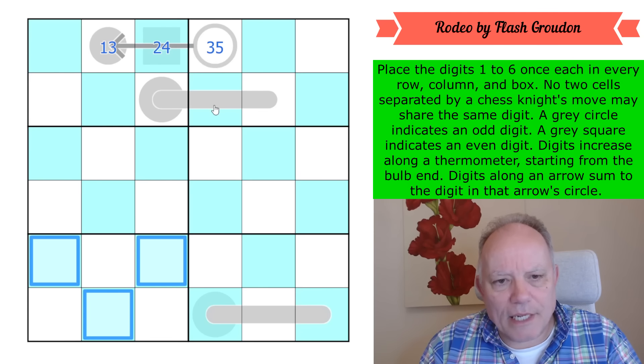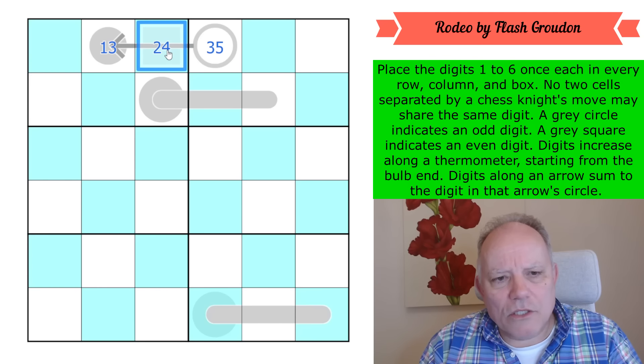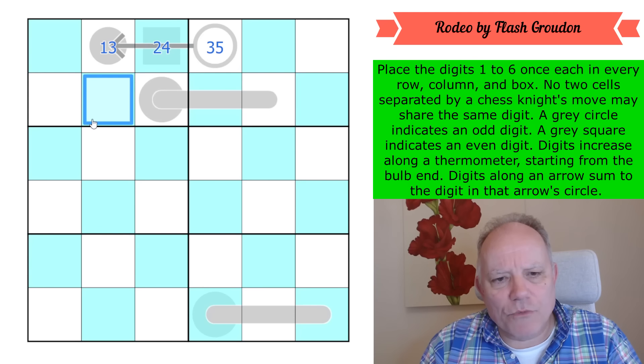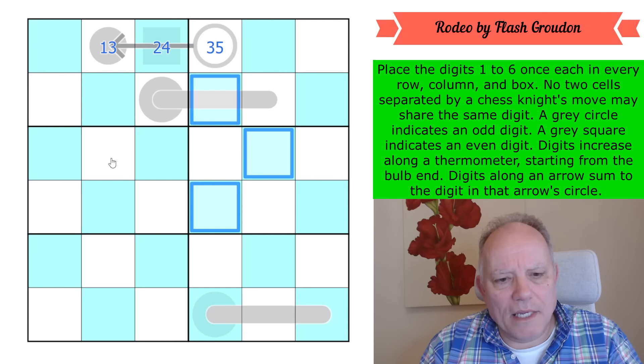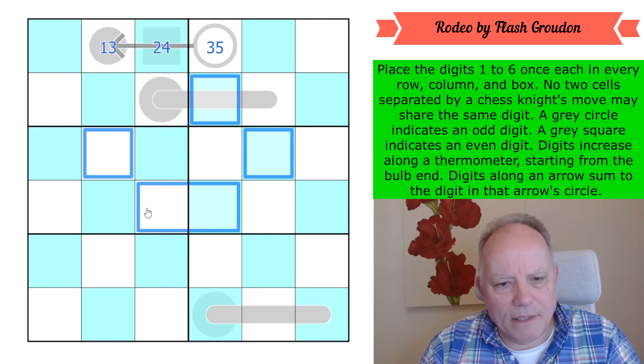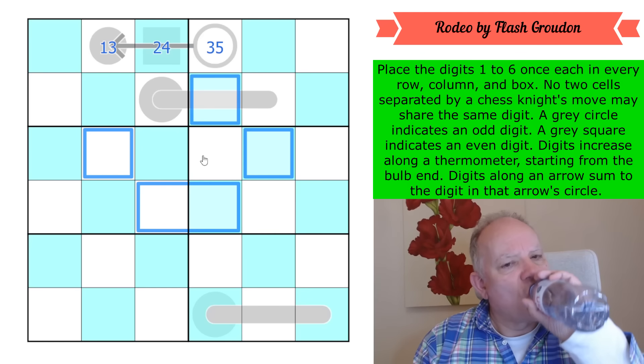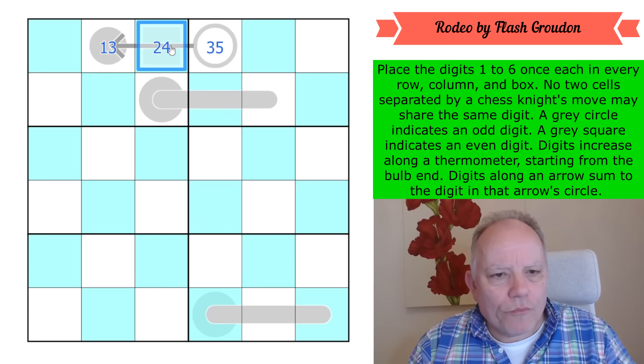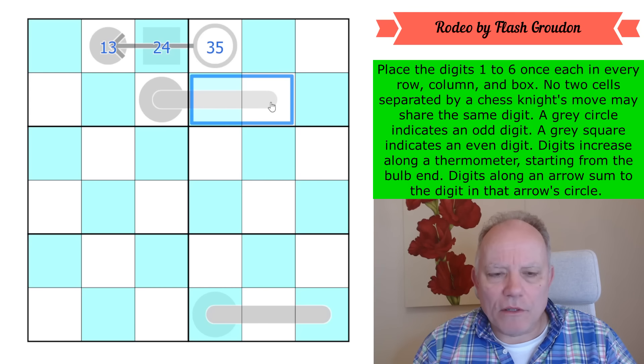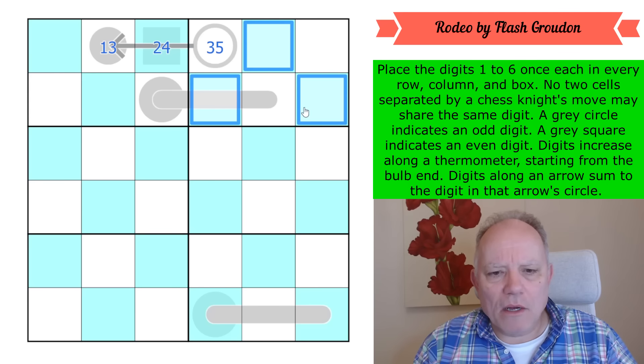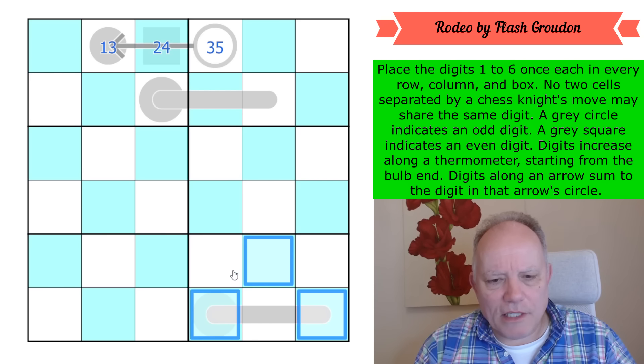We can basically therefore color this whole grid into two colors alternating like a bishop would move in chess. Those three digits will appear in those three cells in that box and those three cells in that box, etc. This must work all the time. Now was it just moving across?